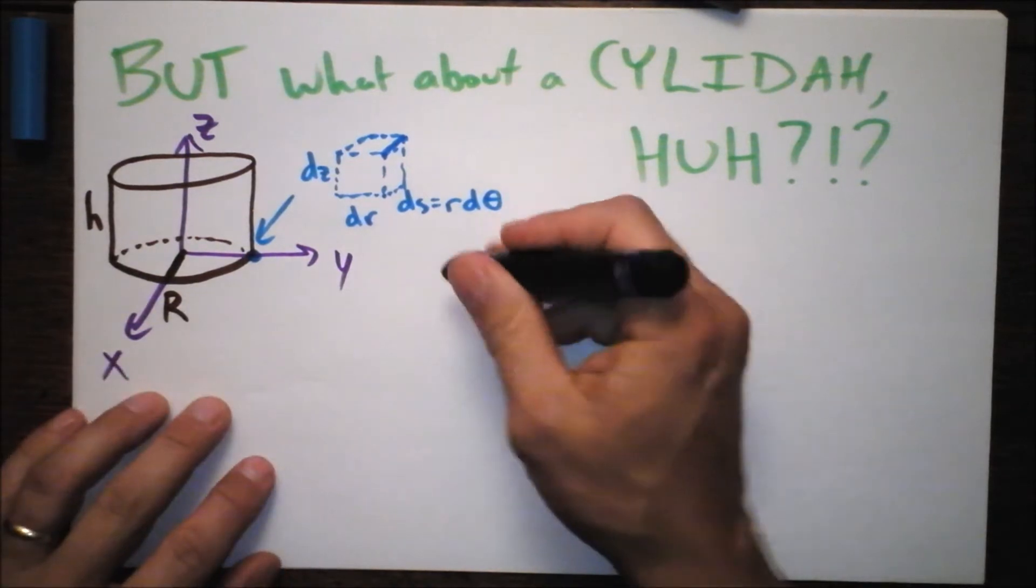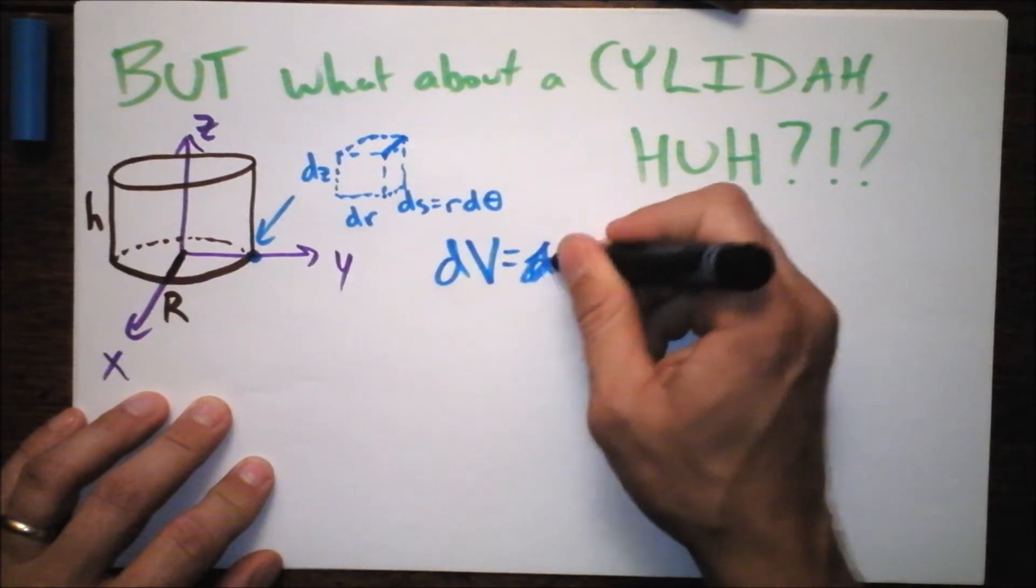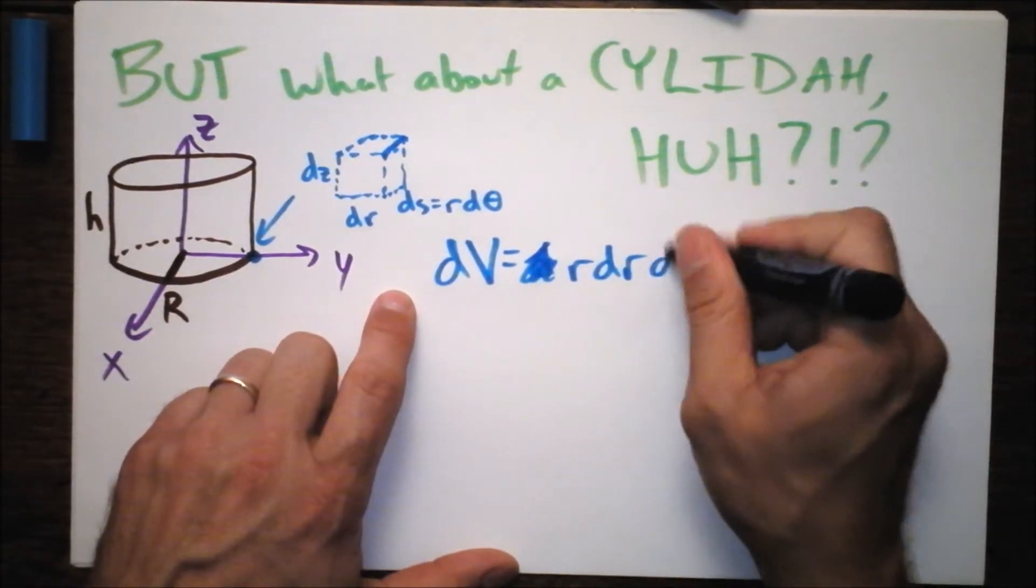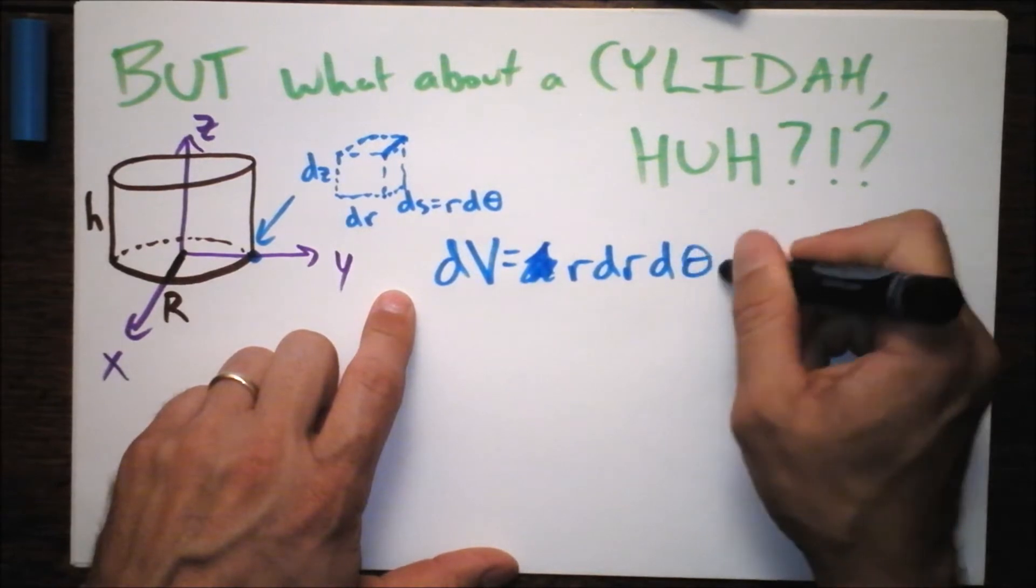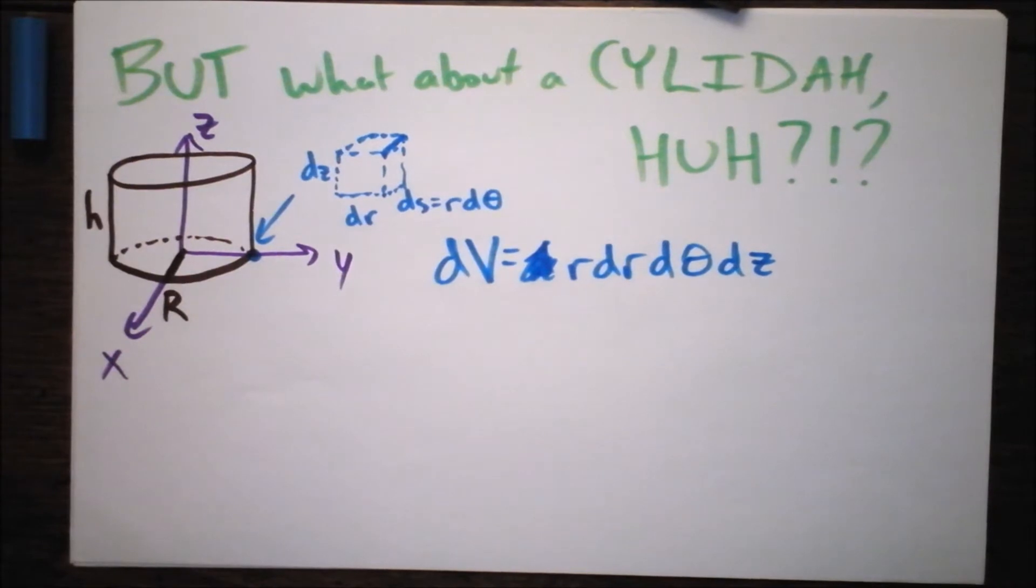In that case, we can define DV as - we should include the R first. R, DR, D theta, DZ. That's this stuff here. If we multiply those three sides of our rectangular prism, then we get ourselves a differential volume.